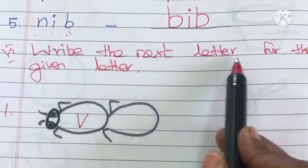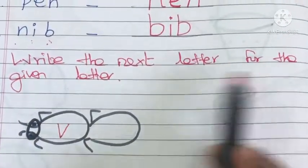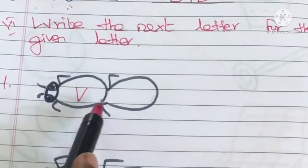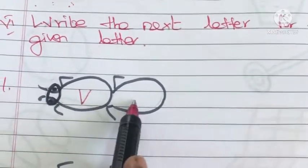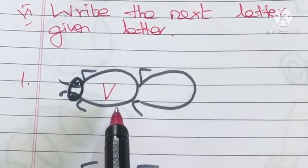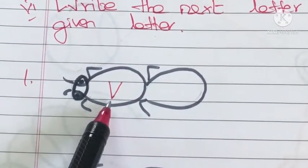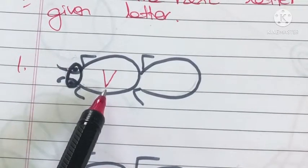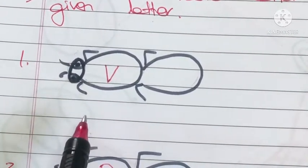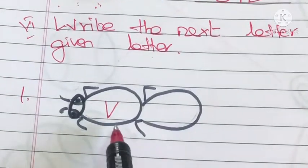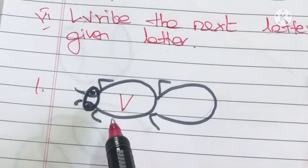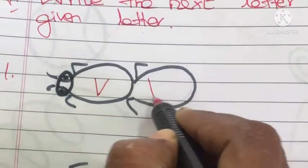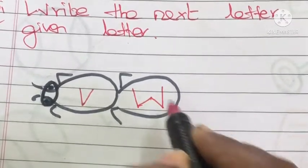See the next exercise: write the next letter for the given letter. Here a letter is given and we have to write the next letter in the alphabet sequence. What is this letter? It is the letter V. What is the next letter for V? The next letter is W. Write it.